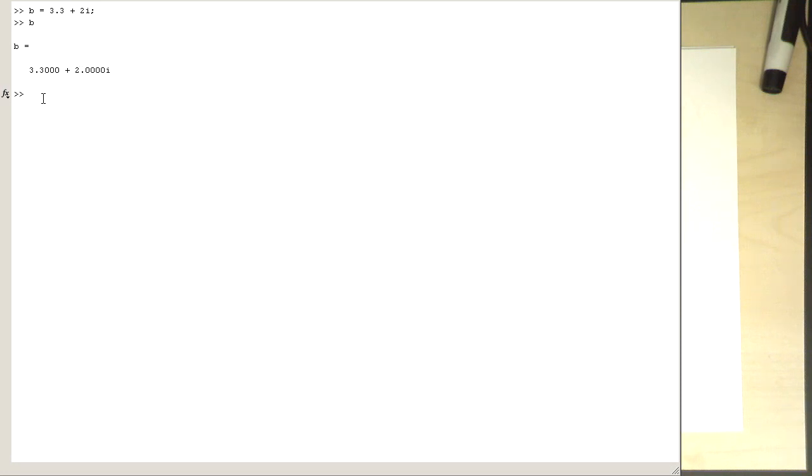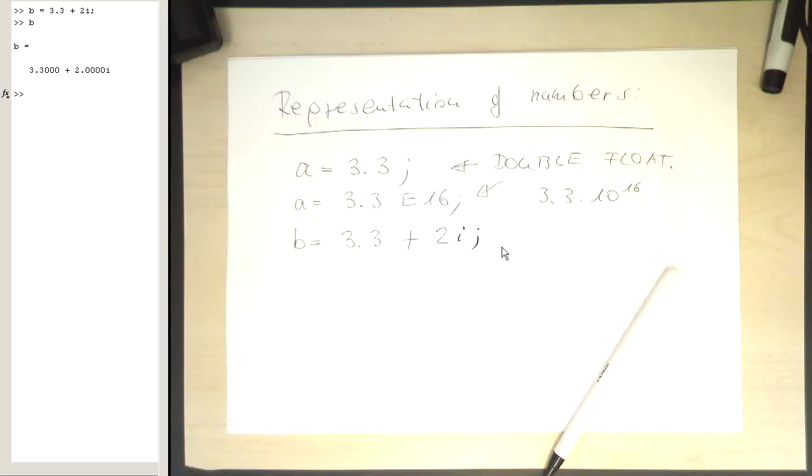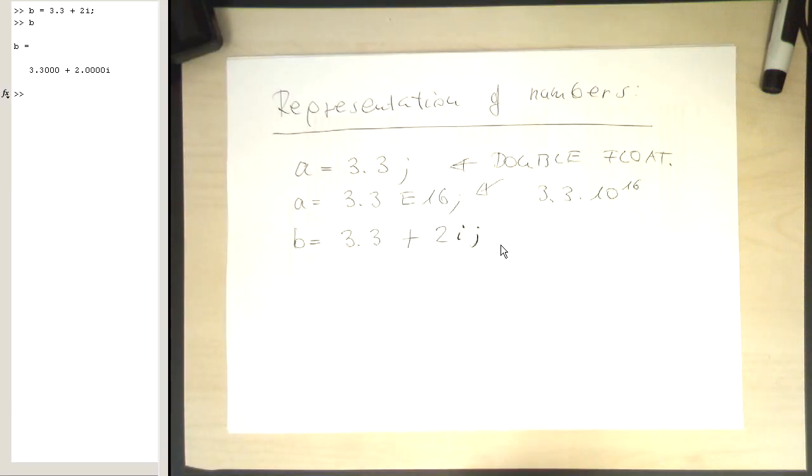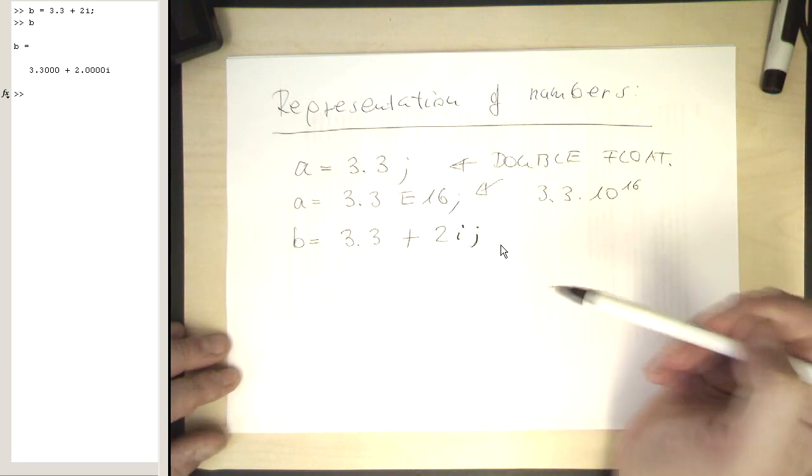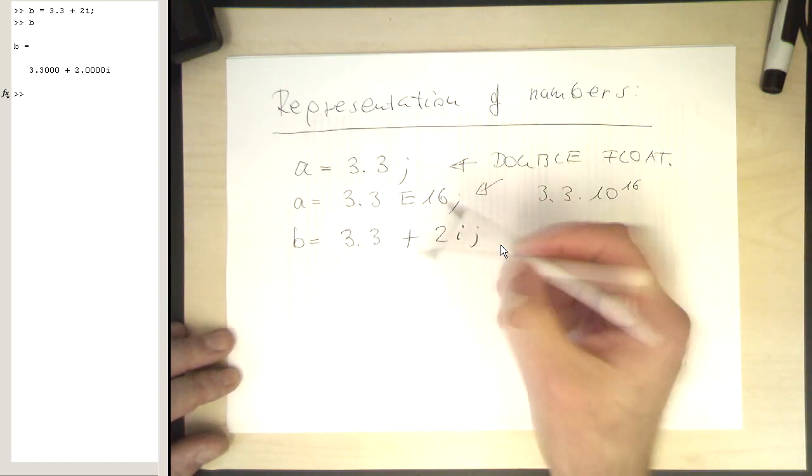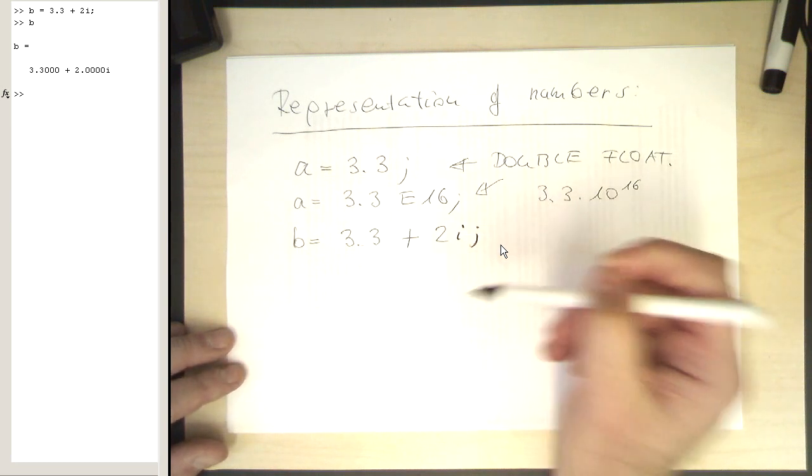j is also allowed for those who like to use j rather than i for complex numbers. Now the question is, how can we create other types of variables? These variables are all floating point variables.